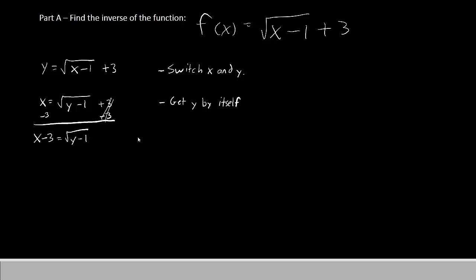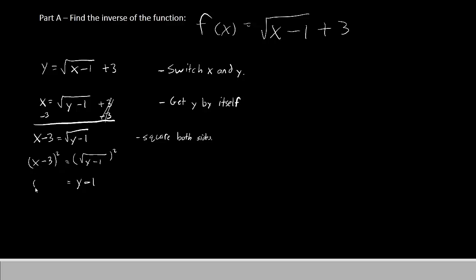Now we have to remove the square root. The opposite of square root is simply squaring. So now we will square both sides: (x minus 3) squared equals the square root of (y minus 1), squared. The square and the square root cancel each other out, leaving us with y minus 1 on the right, and (x minus 3) squared on the left.